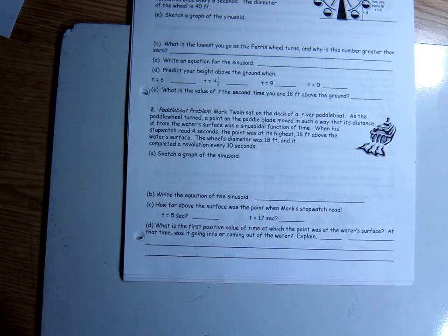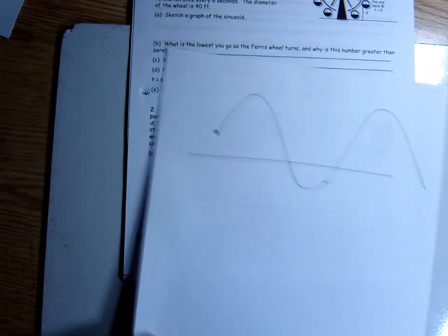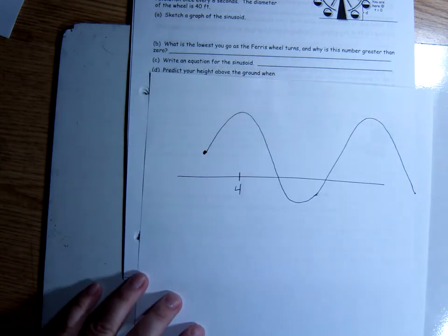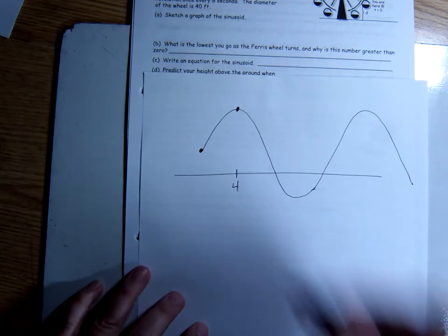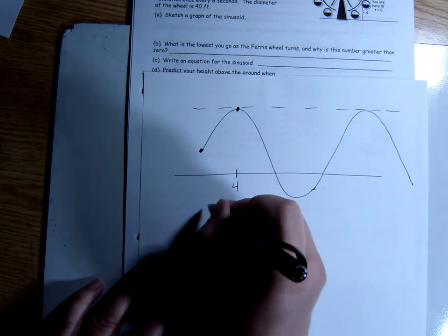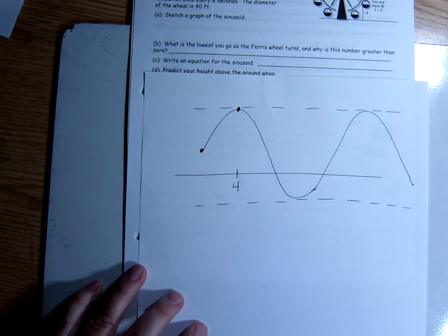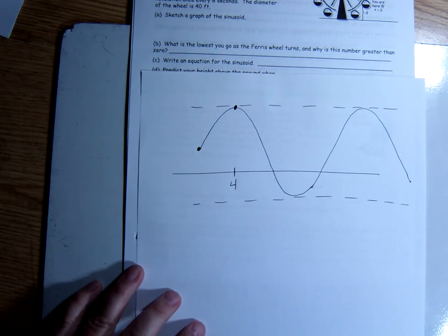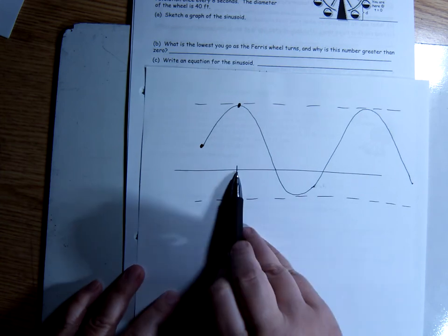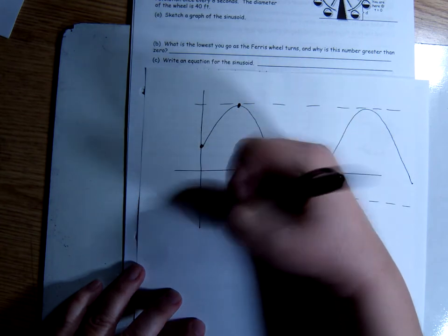When it stopped, when his stopwatch read four seconds, the point was at its highest. So we're going to say after four seconds of timing, it was at its highest point. So this is going to be my highest point. And forgive all the shadows and also if I mess up in terms of your visual, because I'm dealing with a kind of a challenging ceiling leak that makes it hard for me to see my board. So he said four seconds after he starts timing, it's at its highest point. So I'm going to let this be where he starts timing, zero.